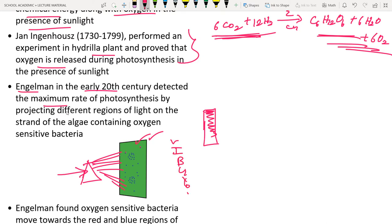The oxygen-sensitive bacteria moved toward the blue and red regions of the spectrum, indicating that algae in those regions produced more oxygen due to photosynthesis. This shows that the blue and red regions are where maximum photosynthesis occurs.